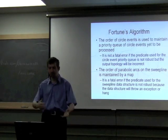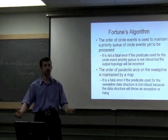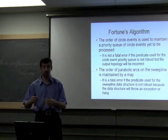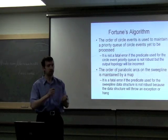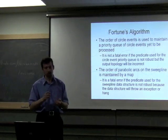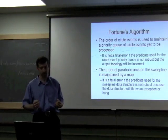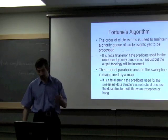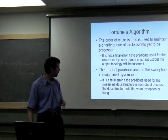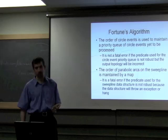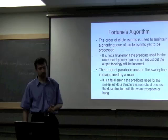In Fortune's algorithm, the order of circle events is maintained in a priority queue, because they're being generated and consumed, as well as invalidated by the forward progress of the algorithm. It's not really a fatal error if you get the order wrong. You just get the wrong topology of your output graph. The algorithm continues happily, doesn't crash. The order of parabolic arcs in the sweep line, maintained by a map, needs to be exactly correct, otherwise you violate the invariant and get undefined behavior.